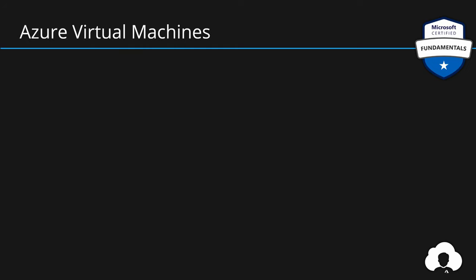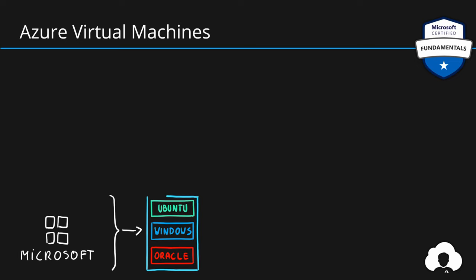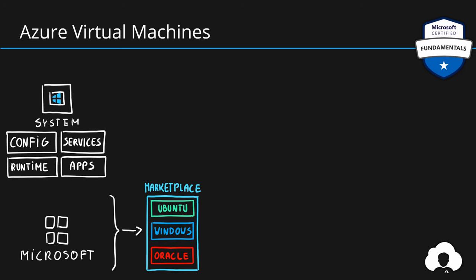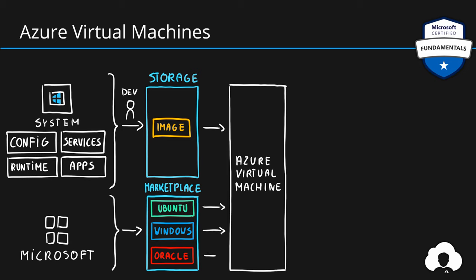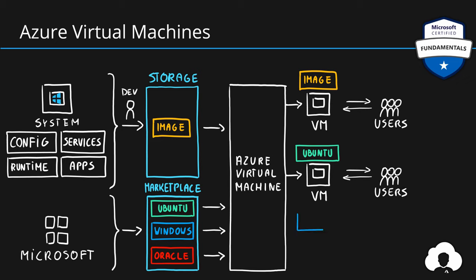Virtualization in the cloud is done through Azure virtual machine service. The process is fairly simple. You either grab Microsoft-prepared virtual machine images — whether this is Ubuntu, Windows, or Oracle — that Microsoft has prepared in the marketplace for you to start from. Or if you want, you can configure your own system, install services, runtimes, and applications, and ask your developers to prepare a custom image for your company and put that image into some storage. Azure virtual machine service grabs those images and allows you to create new virtual machines and expose them to your users. In just a couple of minutes, a virtual machine will be provisioned and ready to use.